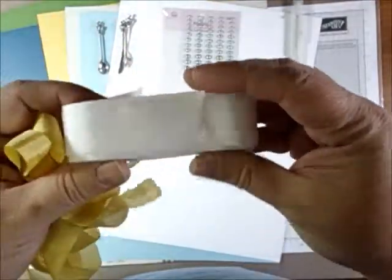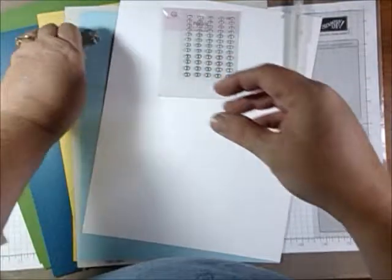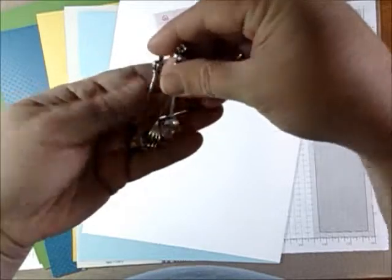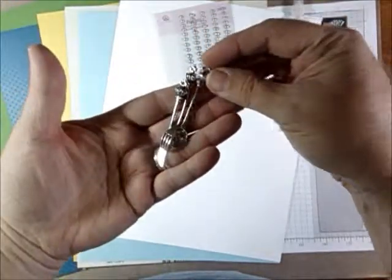You get some yellow seam binding and some wide white seam binding. These cute little fork, knife and spoon charms. Aren't they cute?